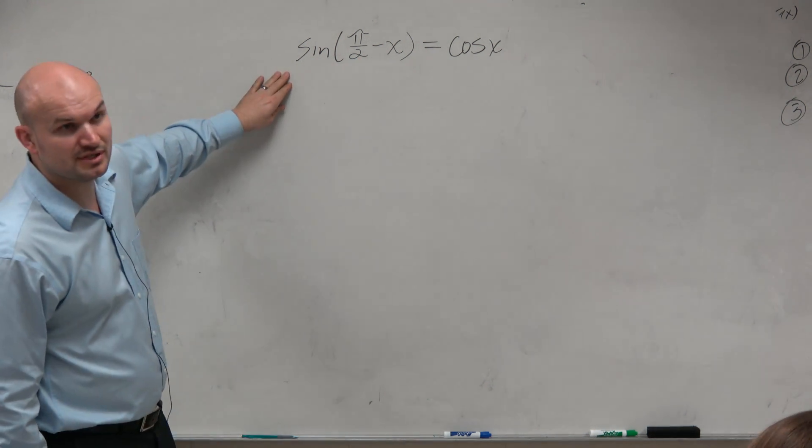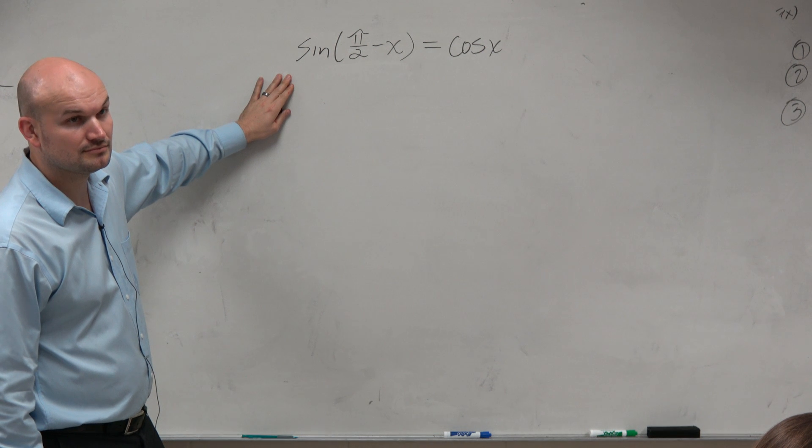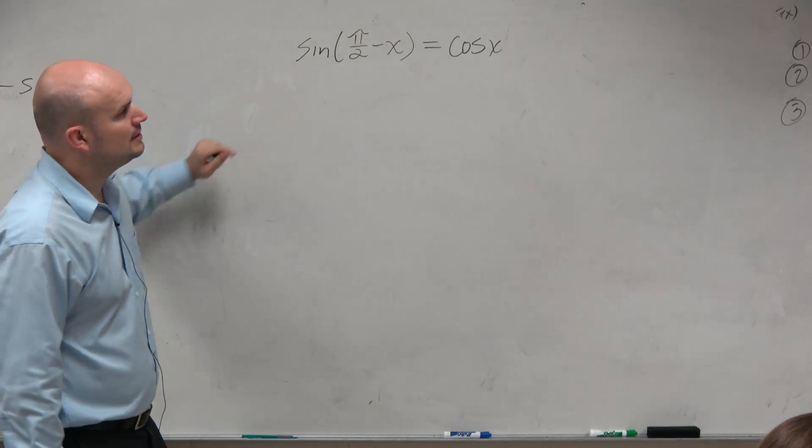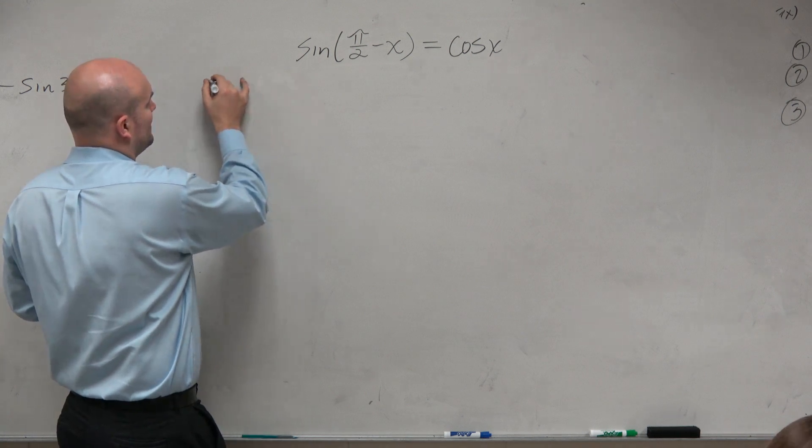So first, I'm just going to apply the formula. Yes? So x is like an unknown? Yeah, x is an unknown. Alright. So if we apply this sum and difference formula, we have sine of pi over 2 times the cosine of x.